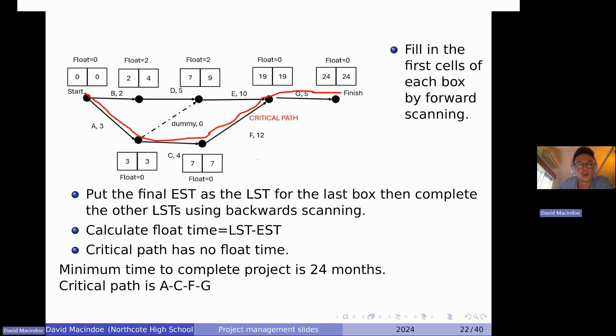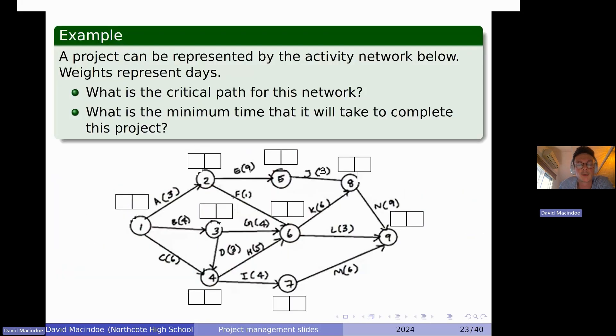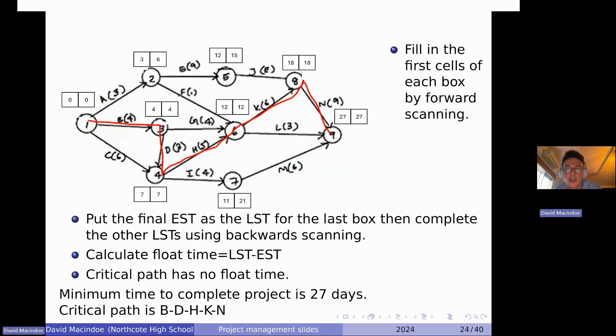Very good. So hopefully that's not too bad, that process. Just a process, like lots of things in networks definitely requires lots of practice. I've got a more complicated one here that I'm going through, but I think what we'll do is if you'd like to give this one a go yourself, you could just pause the video, copy out that network for yourself, and put in all the forward scanning and backward scanning. I think it's a similar process to before, and I've got some answers here. You can also pause the video once you're ready to see the answers, and hopefully you've got the same critical path and the same ESTs and LSTs.